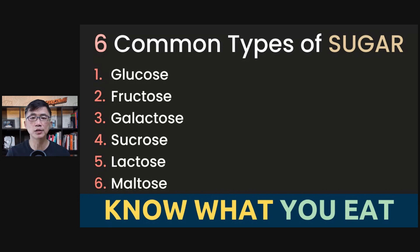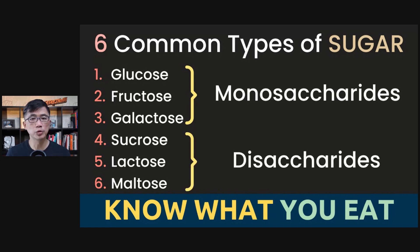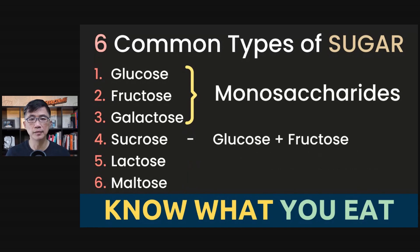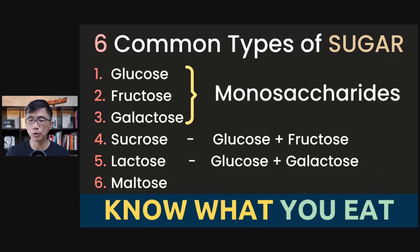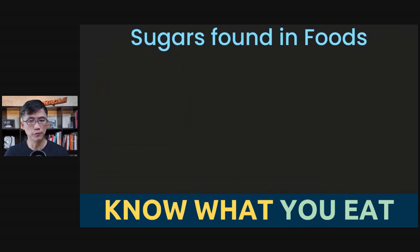So these are the six common types of sugar that we consume. Glucose, fructose, and galactose are monosaccharides, meaning that they are made up of a single molecule of sugar. While sucrose, lactose, and maltose are disaccharides, meaning that they are made up of two molecules of sugar linked together. Sucrose is glucose plus fructose. Lactose is glucose plus galactose. And maltose is glucose plus glucose.